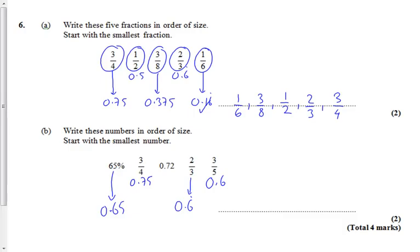Now we'll start with the smallest, so we can see that three fifths is the smallest, followed by 65%, followed by two thirds. Let's make a correction.